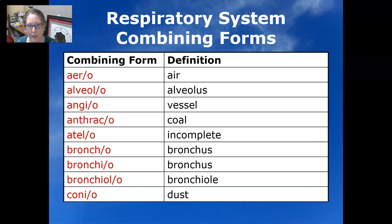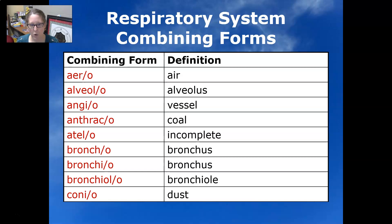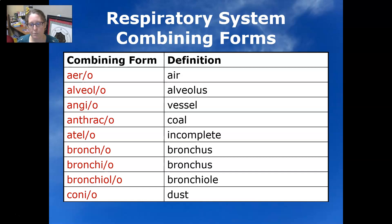Aero means air. Alveolo means alveoli or alveolus. Angio means vessel. Atelo means incomplete. Broncho means bronchus, and bronchiolo means bronchiole.